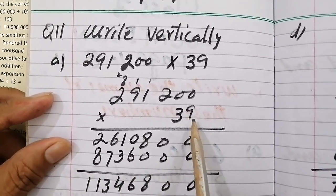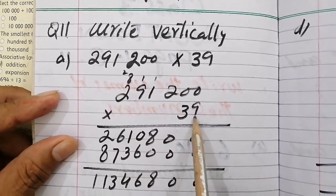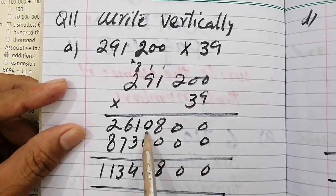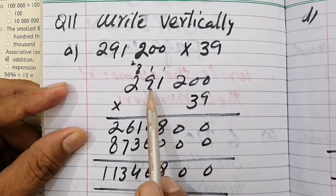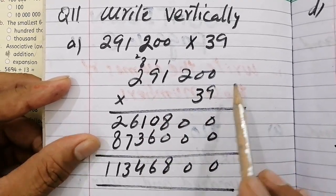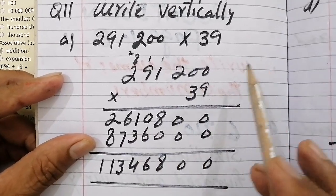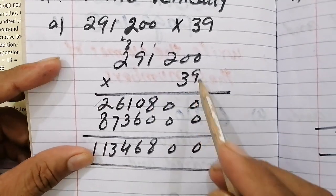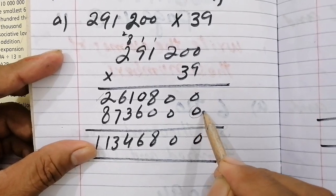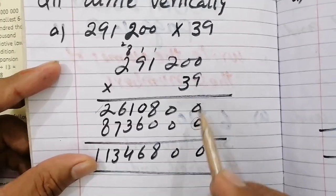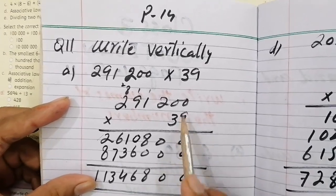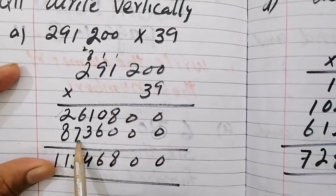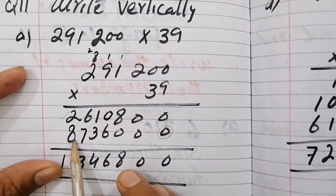To multiply, we go step by step: 9 times 9 is 81, carry 8. 9 times 2 is 18 plus 8 is 26. This way you can add 3, so we can add 3 to the 10th place. 1, 0 we can add here.